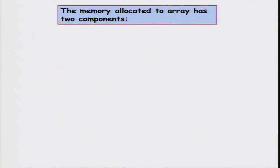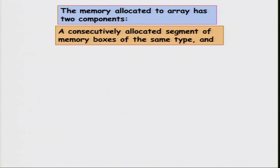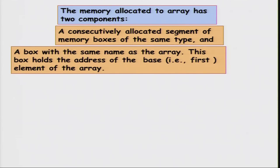We will recap what we know about arrays because arrays and pointers are very closely related in C. The memory allocated to any array has two components: first, there are a bunch of consecutively allocated boxes of the same type, and second, there is a box with the same name as the array, and this box contains the address of the first element of the array.